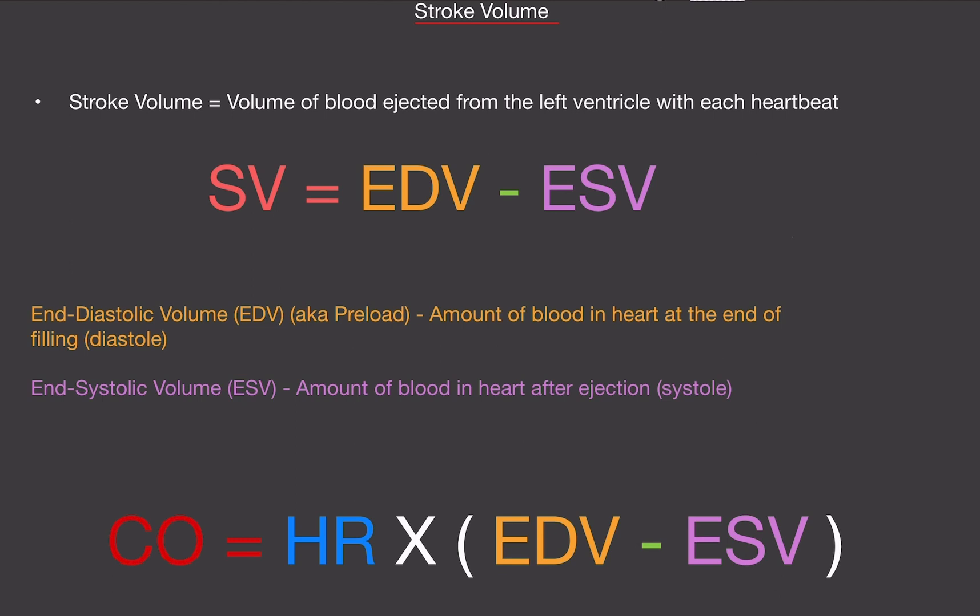So let's do this. End-diastolic volume or EDV, also known as preload, that's another fancy word for it, is the amount of blood in the heart after filling or diastole. So after the left ventricle is done filling up, that is our end-diastolic volume. How much blood is in the ventricles after filling up?